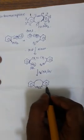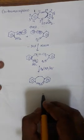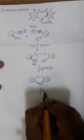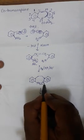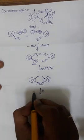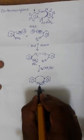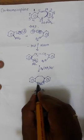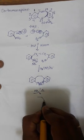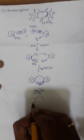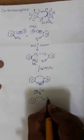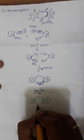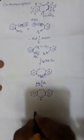This intermediate with 2 amine groups is then heated. Whenever 2 NH2 groups come together, one ammonia molecule (NH3) is removed — NH2 from one side and H from the other form NH3. So one NH3 is removed and the NH connects with the benzene ring, forming the ring-closed intermediate with an NH bridge.